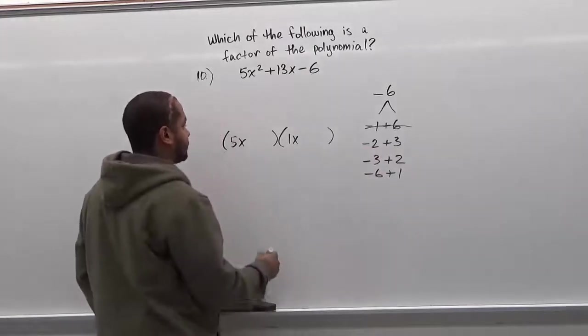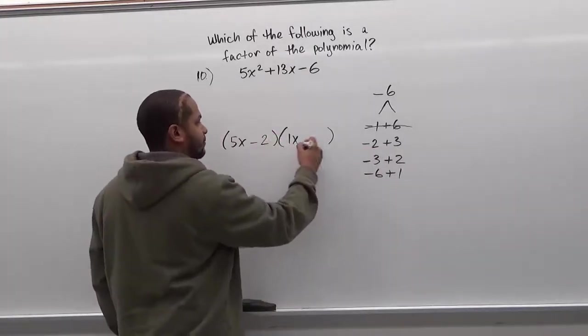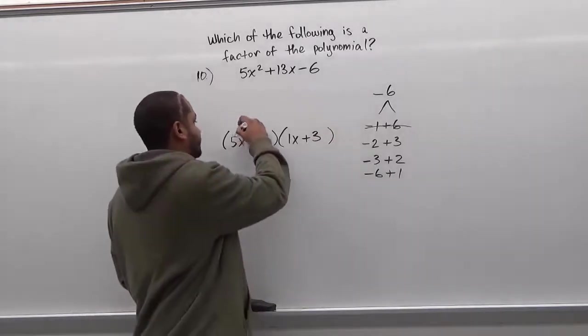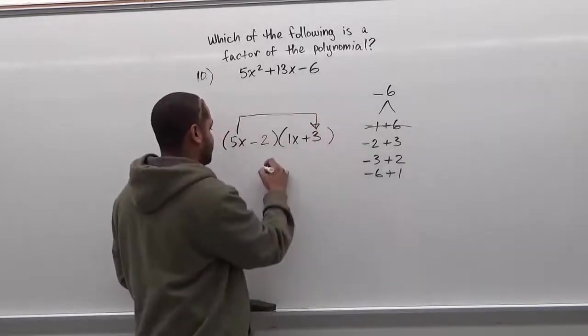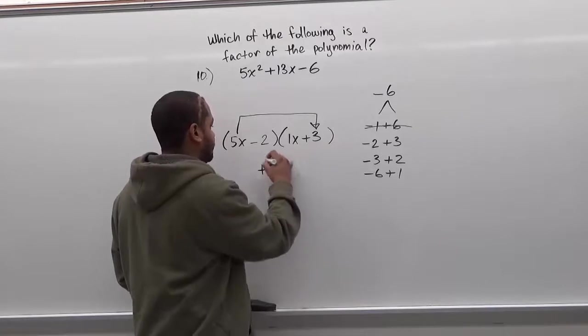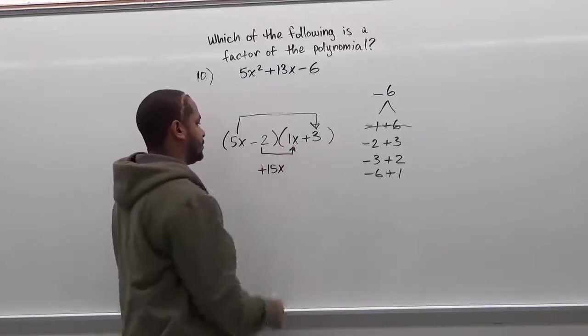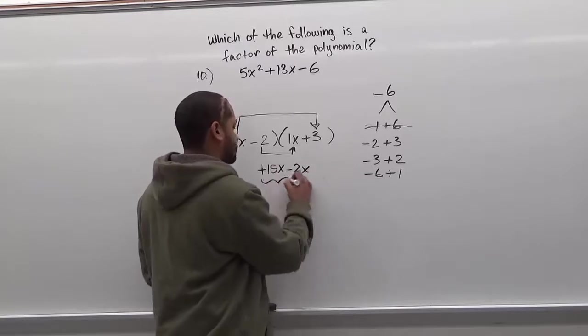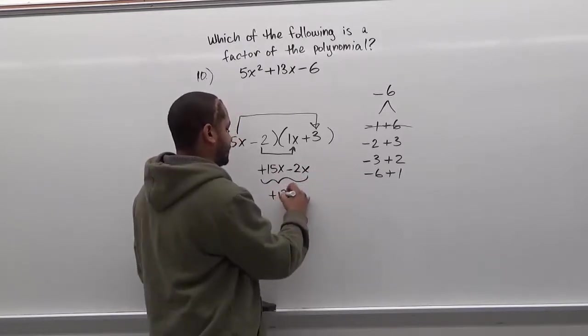We're going to try the second set of factors now. So here we have negative 2 and positive 3. Now we have 5x times positive 3 that's going to be positive 15x. We have negative 2 times positive 1, this gives us negative 2x. When we add these two up we get positive 13x.